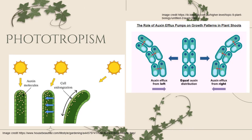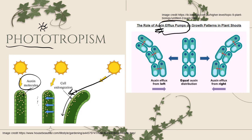Here are more details on phototropism — growth in response to light. Auxin molecules activate proton pumping to loosen the cellulose and stretch plant cells so they grow. If we have unequal light — more exposure on one side and less on the other — efflux pumps push the auxin to the shady side of the plant. Now we have more auxin on the shady side and less on the sunny side. The cells on the shady side elongate while the sunny-side cells stay short, and as this repeats, the whole plant bends toward the light.